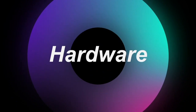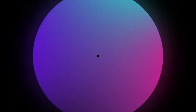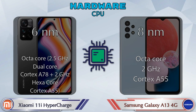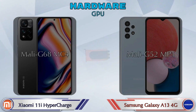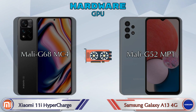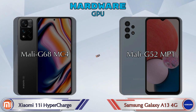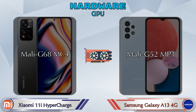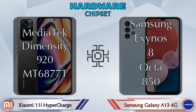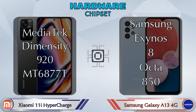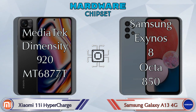First we talk about the most important part: the phone hardware. Starting with the CPU and GPU — the 11i HyperCharge has Mali-G68 MC4, while the Galaxy A13 4G has Mali-G52 MP1. For chipset, the 11i HyperCharge uses MediaTek Dimensity 920 / Helio G96, and the Galaxy A13 4G uses Samsung Exynos 850.